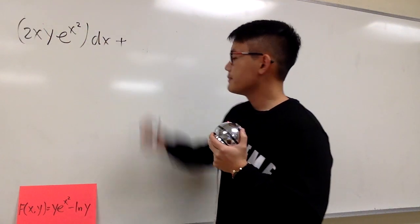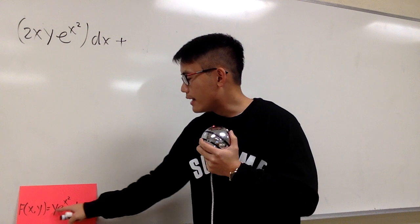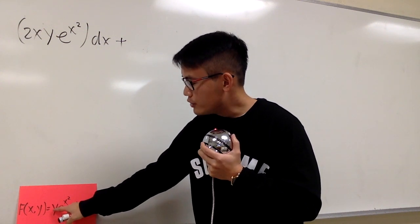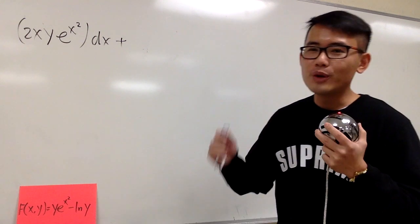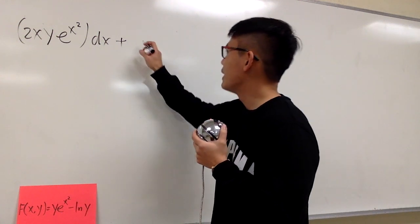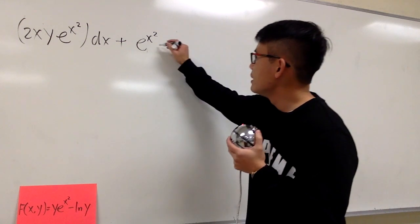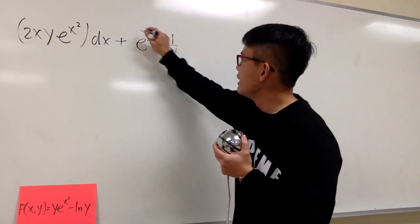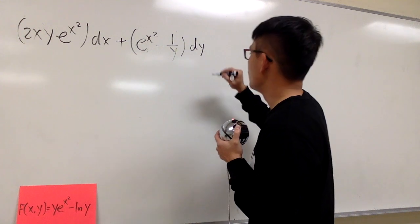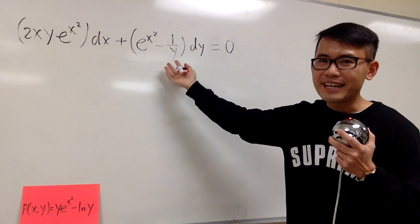Continuing, we have to put down the partial of f with respect to y. We have y times e to the x squared — y is the function, so we have to differentiate y to the first power. The derivative of y to the first power in the y world is just 1, so that stays, giving us e to the x squared. And we also have to differentiate minus ln y, which gives us minus 1 over y. This is the partial of f with respect to y, so it deserves a dy. And we make this equal to 0. This is an exact equation for you.